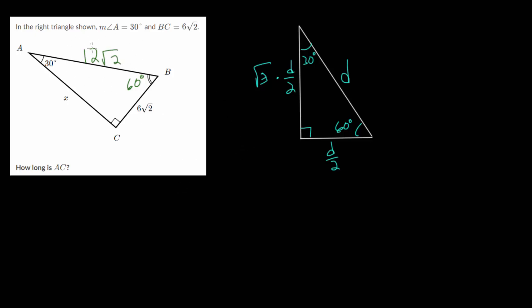Now, we weren't necessarily concerned with that, but we can use that to check our work. And to get this middle side, remember, you take the short side and just multiply by the square root of 3. So x would be 6 root 2 multiplied by the square root of 3.